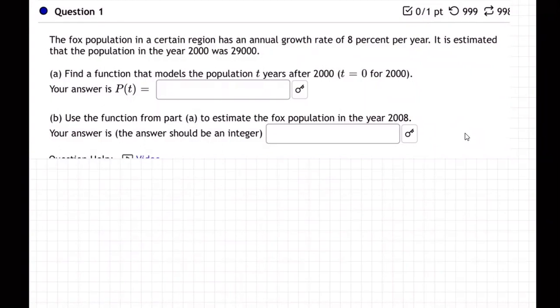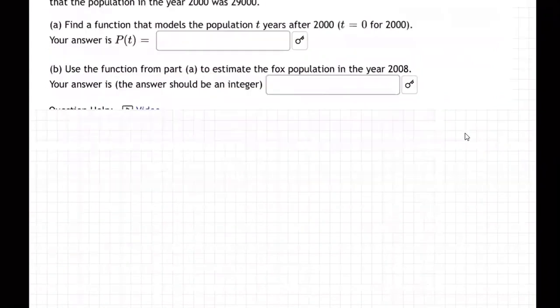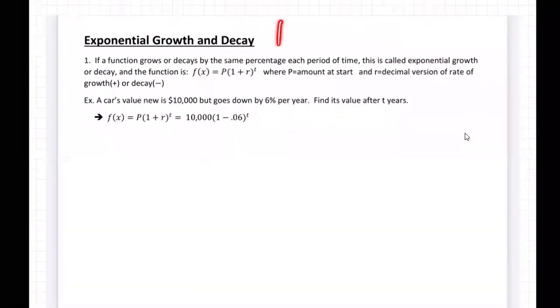And its annual growth rate is 8% per year. Wildlife management people will use these kind of equations. They don't have to derive them, and they probably have computer applications that help them. But nevertheless, the people in the know basically use exponential growth when dealing with animal populations. So it says find a function that models the population T years after 2000. T equals zero for 2000. And then down here is some kind of prediction.